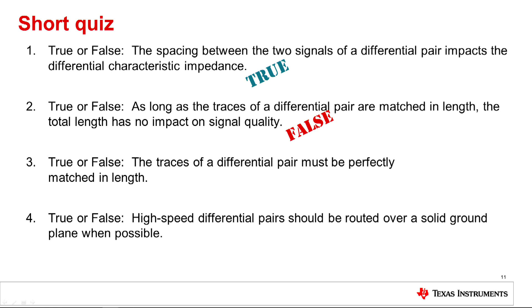True or false: the traces of a differential pair must be perfectly matched in length. False, there is some tolerance within the USB spec that allows for mismatch in a differential pair of a high-speed signal.